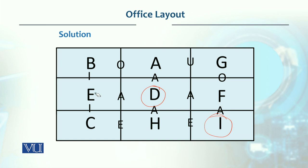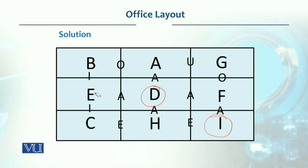We can see that we have placed everything and most of the requirements have been met here, but we cannot meet all requirements. Basically, if we meet the majority of the requirements, this will be a good layout. It can be further improved by going back to the relationship chart and making slight adjustments — that may bring some further improvement. But this is basically a good layout for the requirements given in the relationship chart.